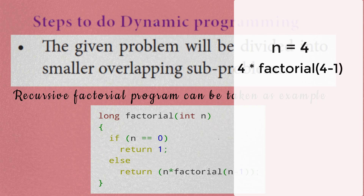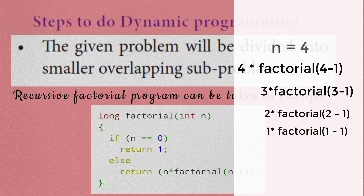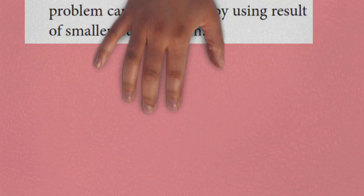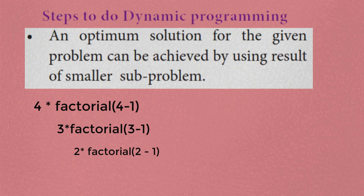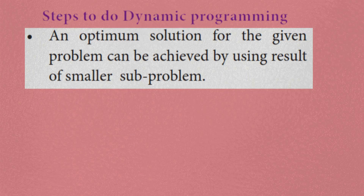Then 4 equals 4 minus 1, 3 equals 3 minus 1, and 3 equals fact of 3 minus 1, then 2 minus 1. Smaller subproblems are split — that is why this is an overlapping subproblem. An optimum solution for the given problem can be achieved by using the result of smaller subproblems: 4 depends on 3, 3 minus 1 gives 2, 2 minus 1 gives 1, and 1 minus 1 gives 0.